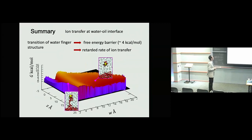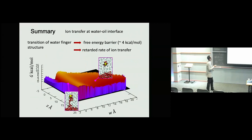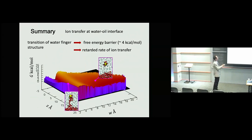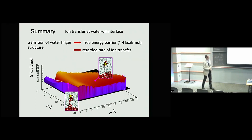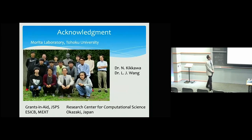To summarize, we investigated ion transfer at oil-water interfaces. During that transport, the transition of the water finger structure is involved, which produces free energy barriers and naturally elucidates the retarded rate of ion transport. Finally, I would like to acknowledge my group members and grant support. Thank you very much for your attention.